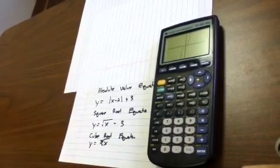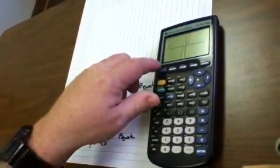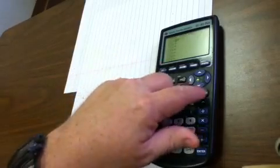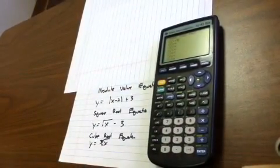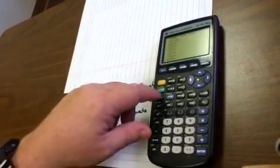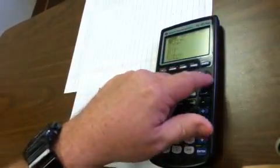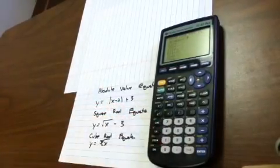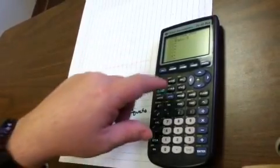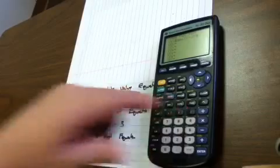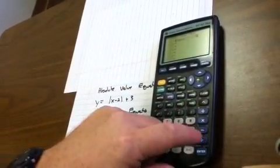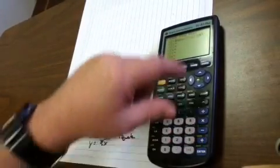So we're going to graph the absolute value equation. Hit y equals, clear out the old one. Now, as in the previous tutorial, the absolute value you graph by using the math function, arrow over to num, select one for absolute value. Inside the absolute value, I'm going to put x minus 2, close out the absolute value, and then I'm going to put a plus 3 and hit graph.